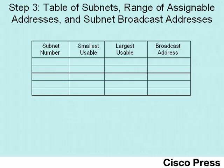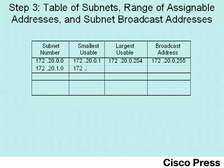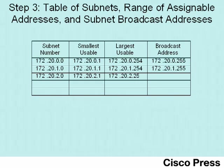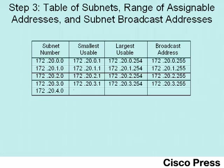You've now seen three methods for finding a subnet's broadcast address: the method shown in labs four and five, plus the two methods shown in this video. Regardless of how you find it, once you know a subnet's subnet number and broadcast address, you can easily find the range of valid assignable addresses. The lowest assignable IP address is one larger than the subnet number, and the largest usable IP address is one smaller than the broadcast address. The table scrolling on screen shows the subnet number, broadcast address, and smallest and largest usable IP addresses for each subnet.